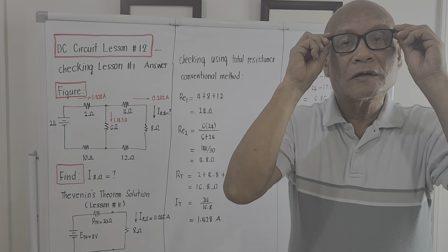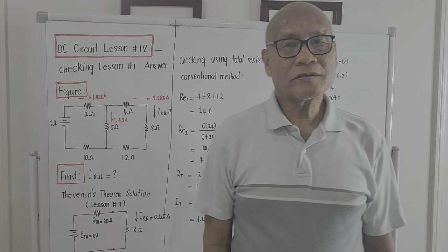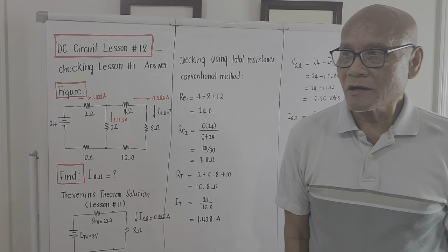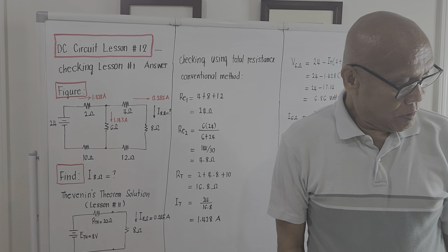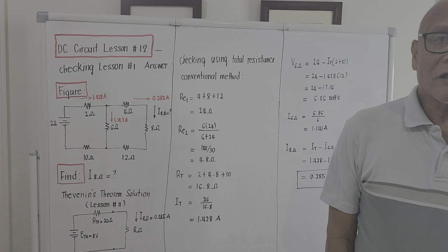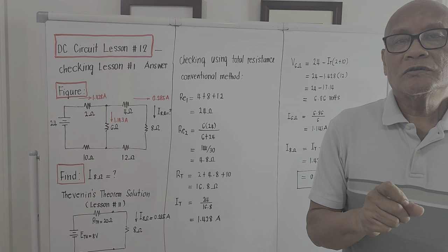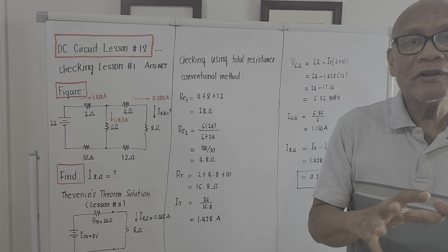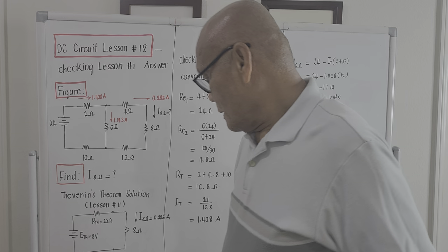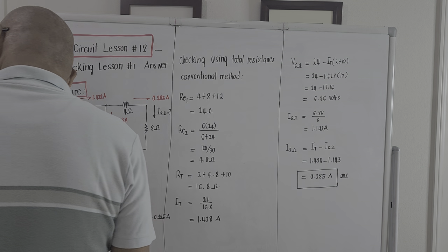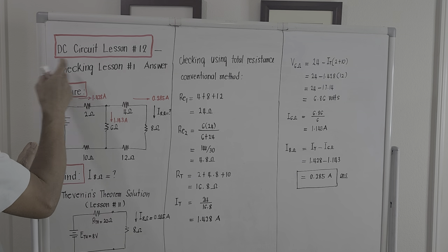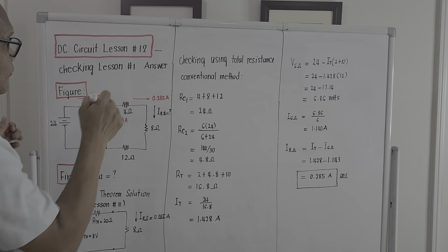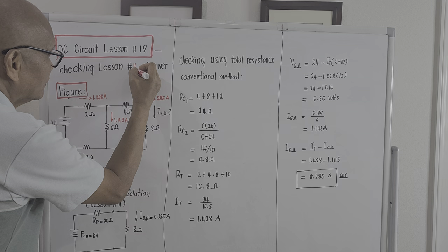Good evening ladies and gentlemen, this is Professor David J. de los Reyes. The date today is July 9, 2024, and the time is around 7:45 PM. Our life must go on. My topic for this evening will be a continuation of my long video format on DC circuits. We are now on Lesson Number 12, which is the checking lesson for Lesson Number 11.